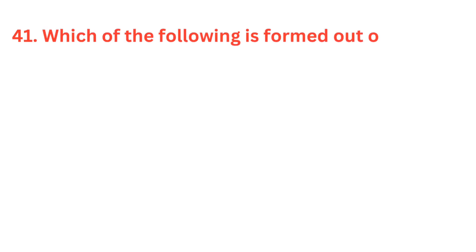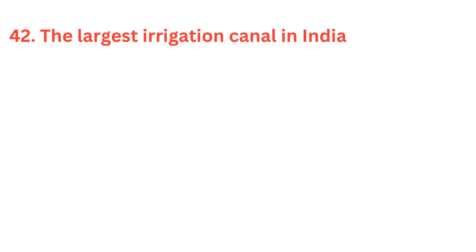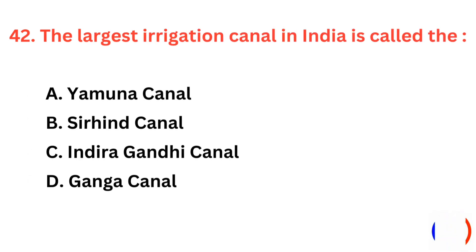Which of the following is formed out of volcanic eruptions in India? The correct answer is option A, Deccan Plateau. The largest irrigation canal in India is called? The correct answer is option C, Indira Gandhi Canal.